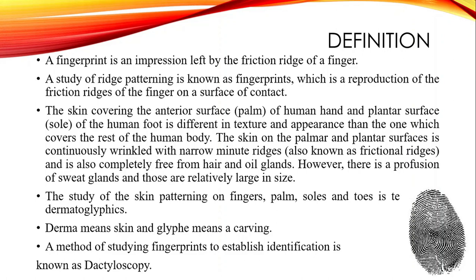The skin covering the anterior surface — that is the palm of the human hand — and the plantar surface — that is the sole of the human foot — is different in texture and appearance from the skin covering the rest of the body. The skin on the palmar and plantar surfaces is continuously wrinkled with narrow, minute ridges also known as frictional ridges, and is completely free from hair and oil glands. However, there is a profusion of sweat glands, which are relatively larger in size.